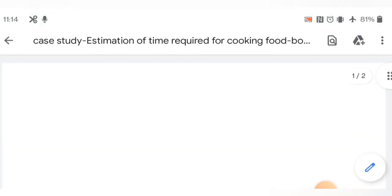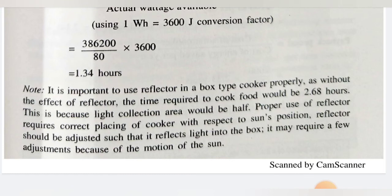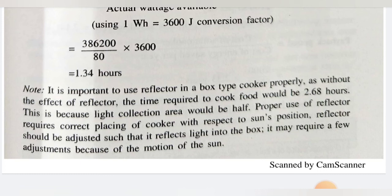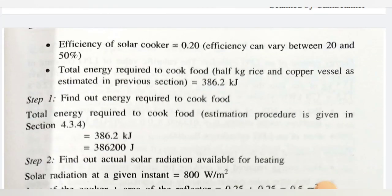An important note: it is important to use a reflector in a box-type cooker properly. Without the reflector, the time required to cook the food would be 2.68 hours, because the light collection area would be halved. Proper use of the reflector requires correctly placing the cooker with respect to the sun's position and adjusting the reflector to reflect light into the box, with a few adjustments needed due to the motion of the sun.